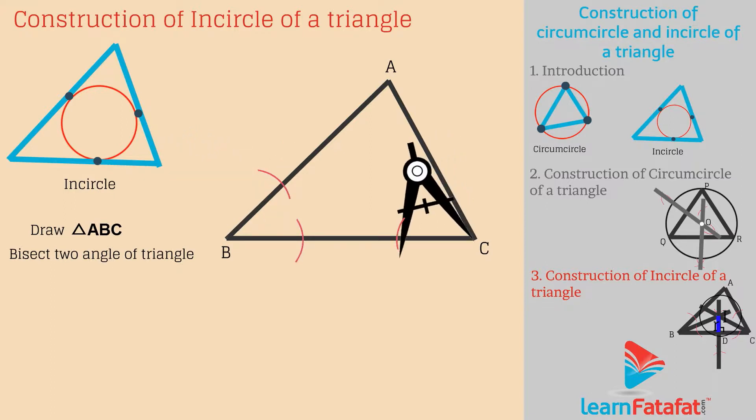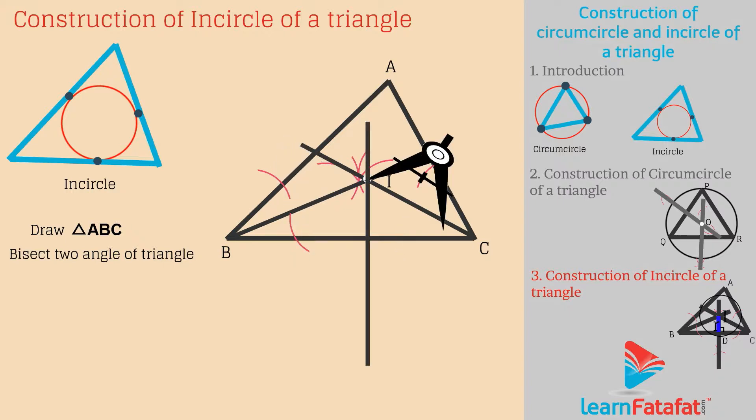Bisect any two angles of the triangle. Let the angle bisectors meet at point I. Draw perpendicular ID on side BC or any other side.